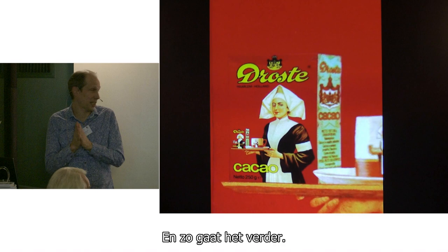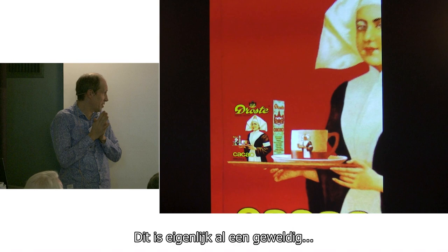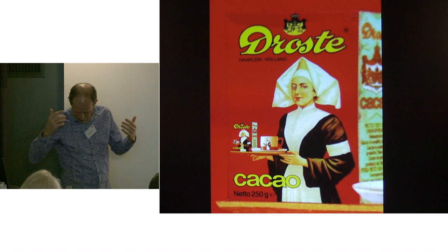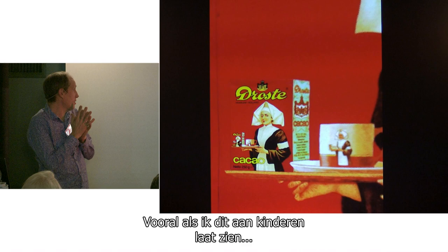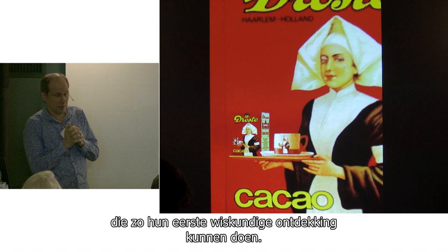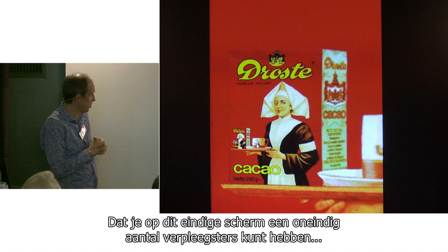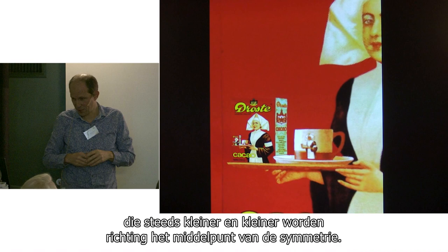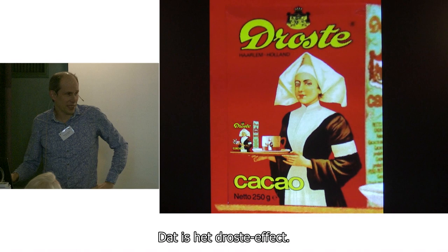This is already a nice point, especially when I show this to kids, where you can make your first mathematical discovery: that on this finite screen, it is actually possible to have an infinite number of nurses getting smaller and smaller towards one center of symmetry. So that is the Droste Effect.